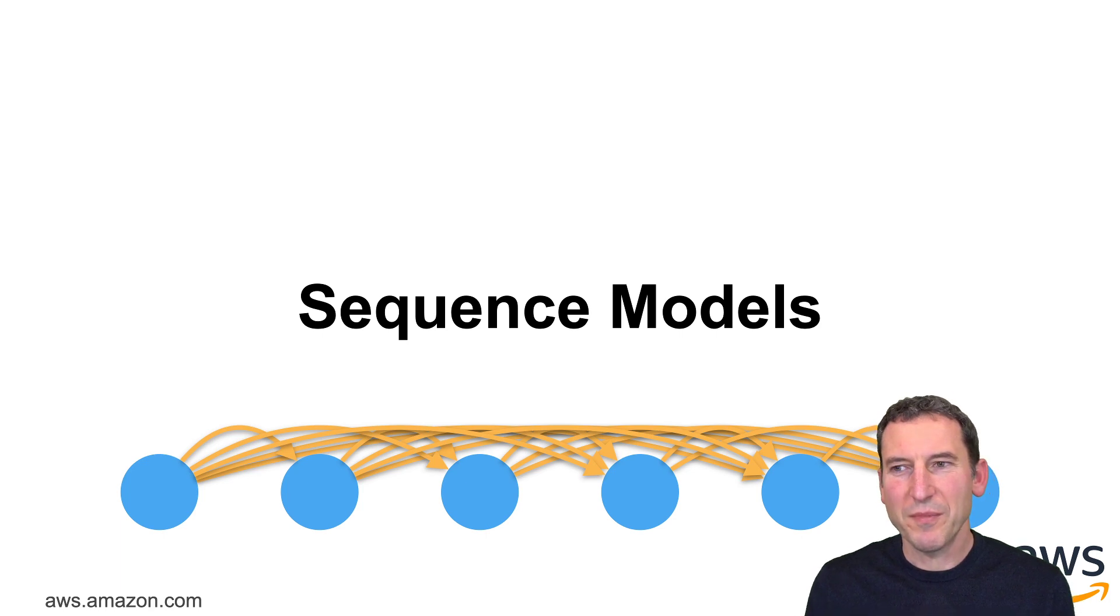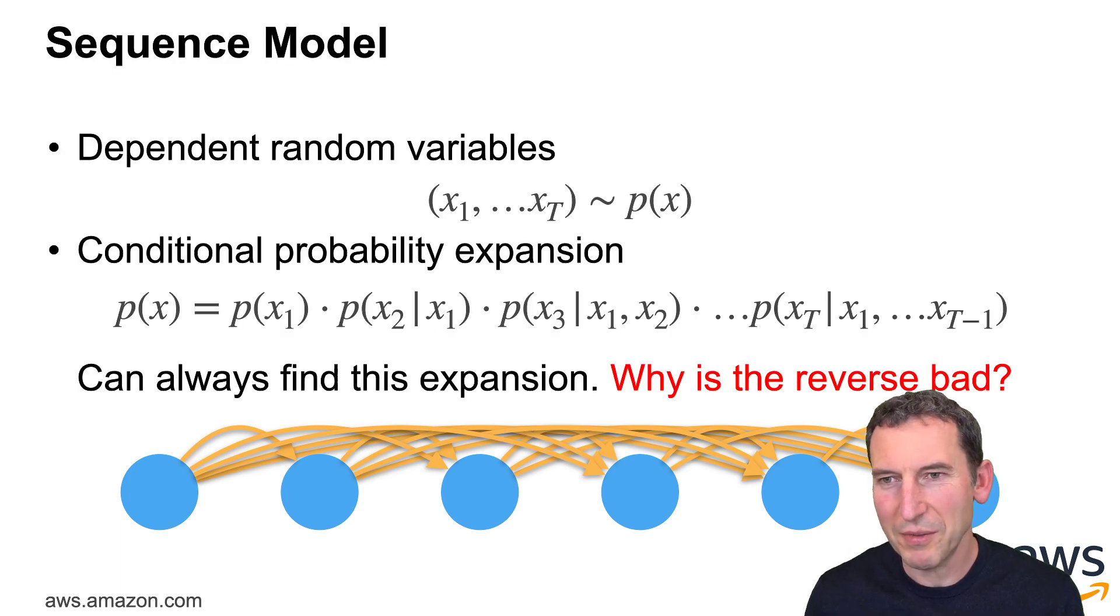So on to sequence models. What we have here is a dependency graph. It goes from left to right and every object there influences all of its descendants but none of the ancestors. So I can write things out as P of X is P of X1 times P of X2 given X1 times P of X3 given X1 and 2 all the way up to P of Xt. I can always find this expansion, right? That's just conditional probabilities.